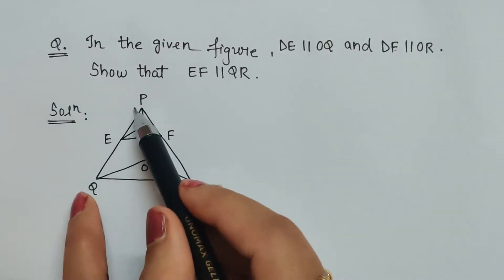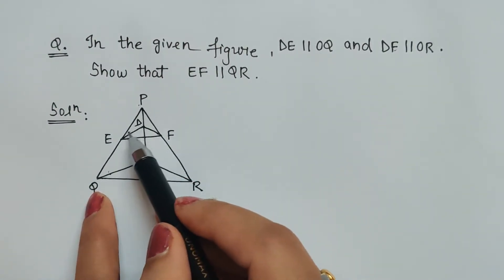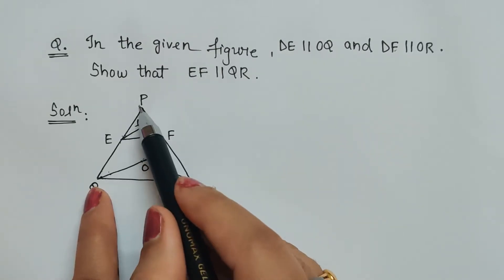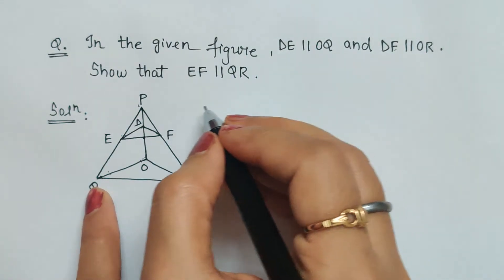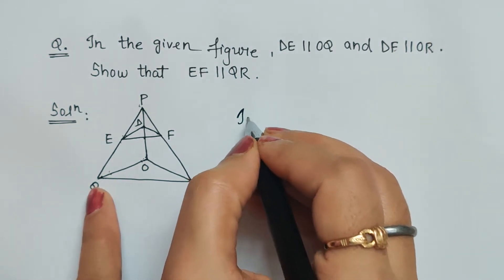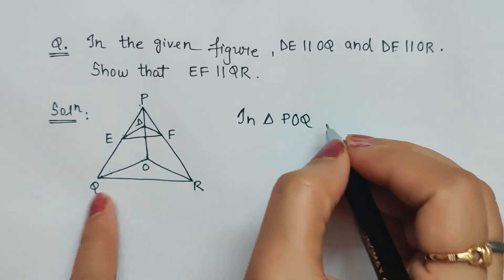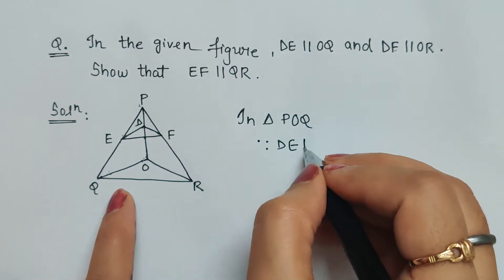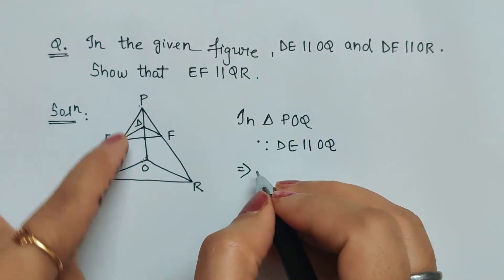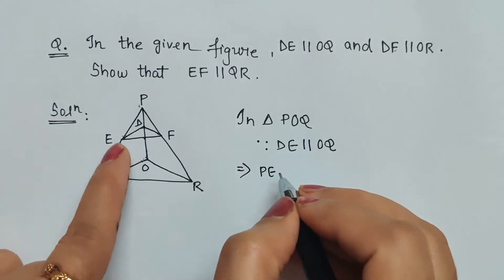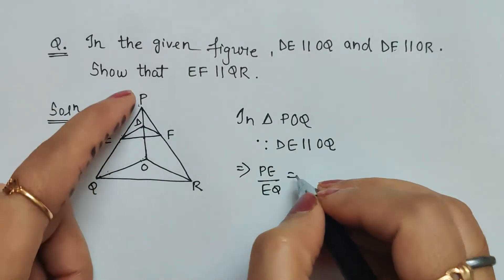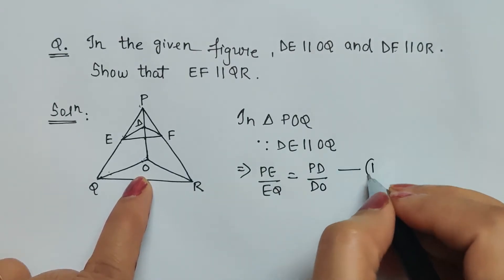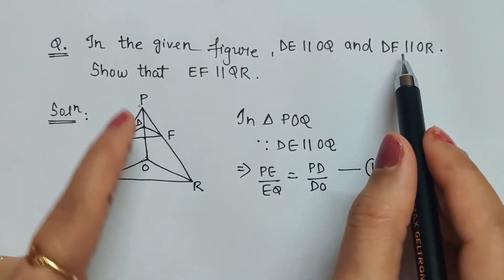DE is parallel to OQ, so in triangle POQ, since DE is parallel to OQ, by basic proportionality theorem we can write: PE upon EQ is equal to PD upon DO. Let us call this Equation 1.